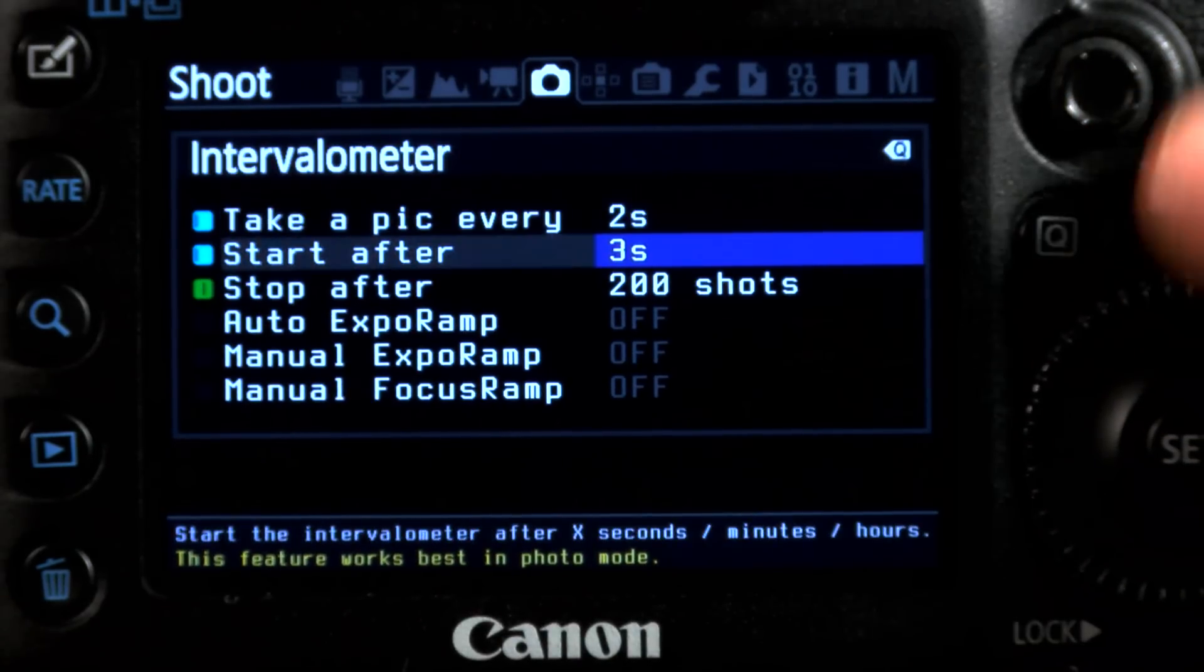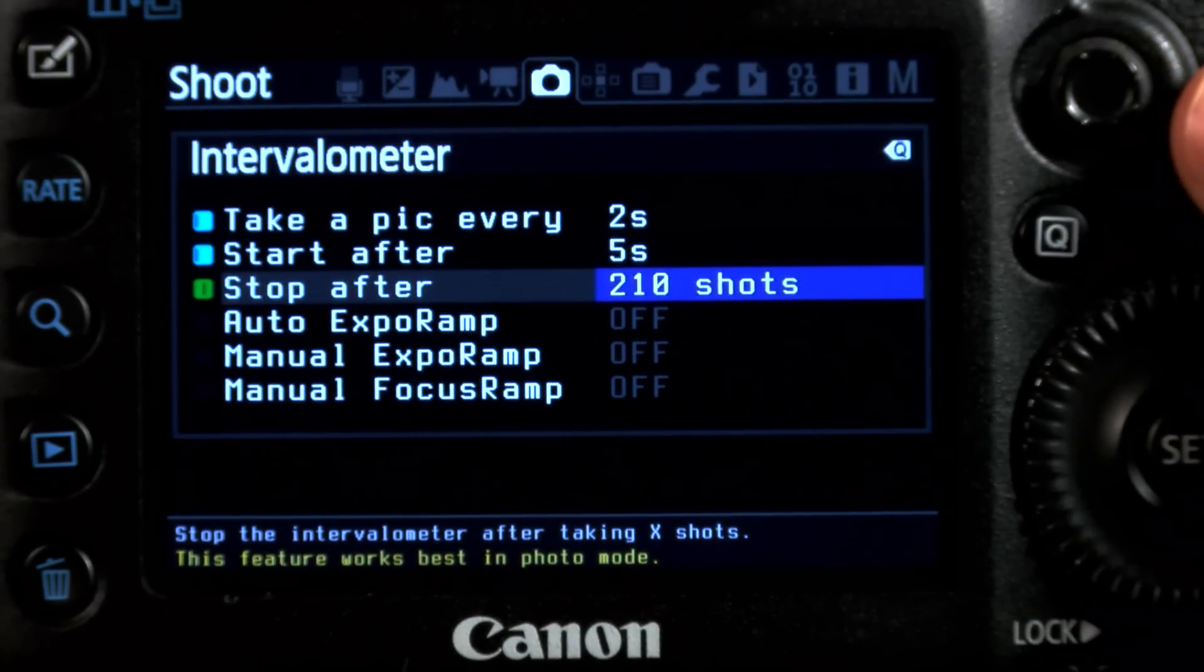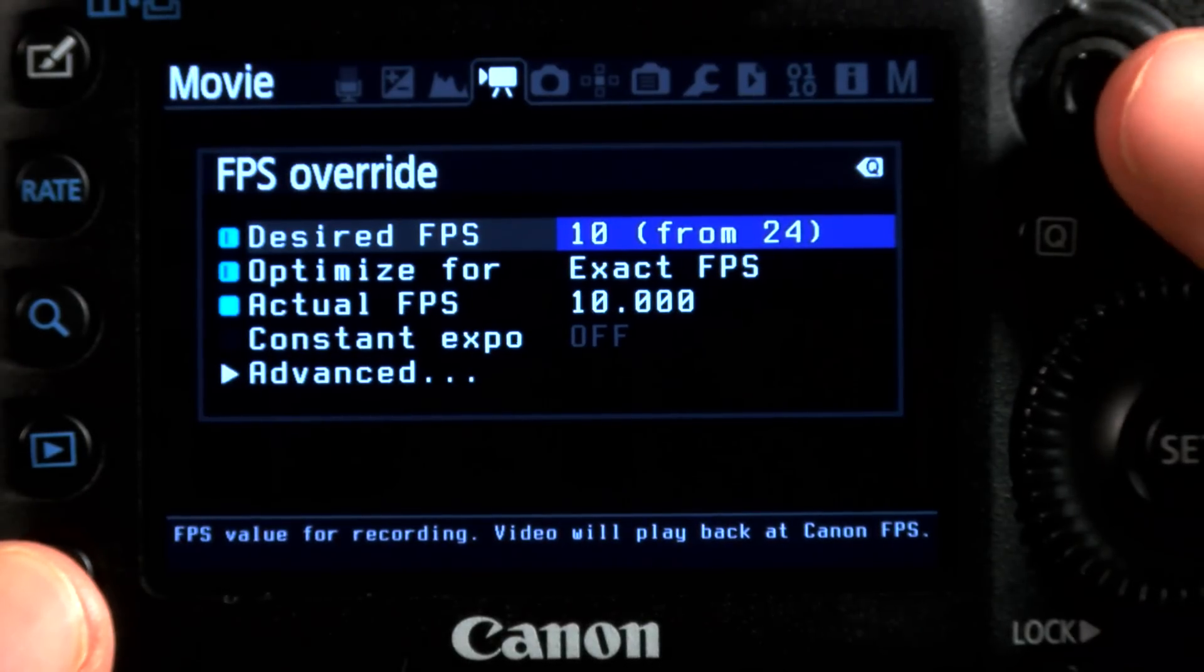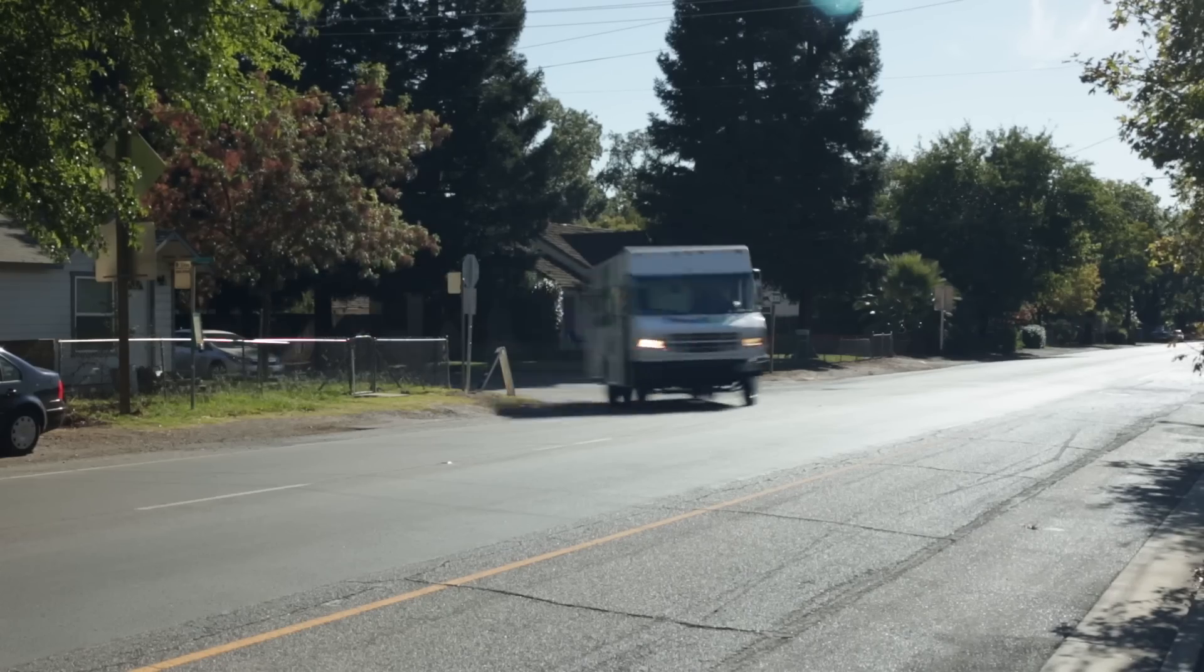A couple other really good features that you can only get in the nightly build are the intervalometer, so you can do time-lapse shots, but also the ability to manually adjust your frame rate beyond what the standard is in movie mode. For example, we turned ours down to three frames per second, which is completely impossible otherwise. We took some footage you can take a look at here.